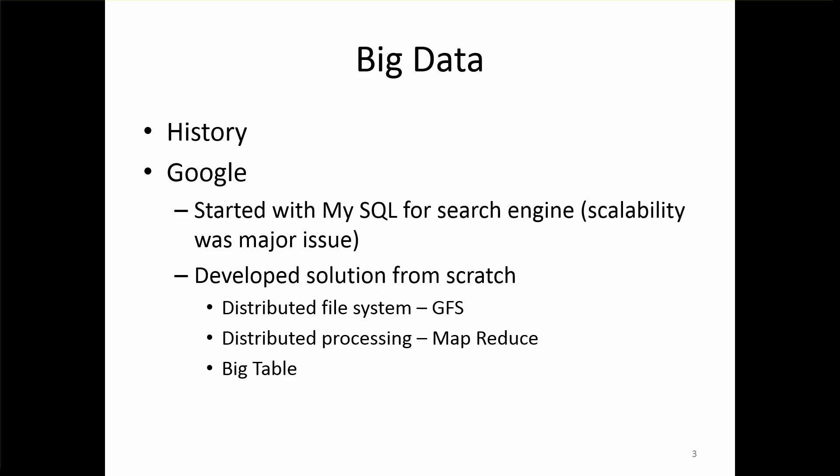So, the history of big data — in the 90s as well as early 2000s, most of the applications were built to solve business problems which address core business needs like banking transactions. For example, if you credit money from one account and debit money from another, that has to be either committed or rolled back as a unit. It should never be in an inconsistent state.